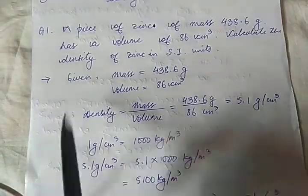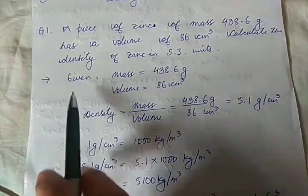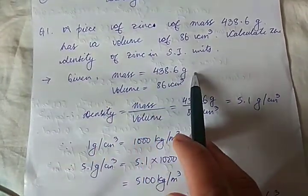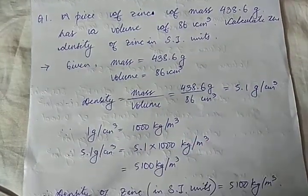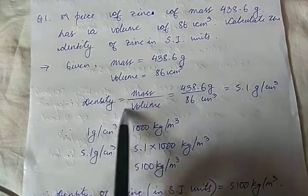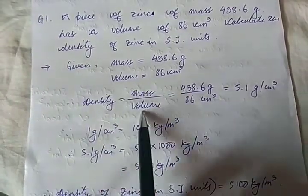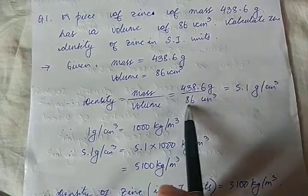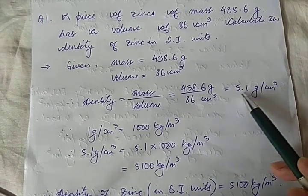Always start a numerical problem with what is given. Given: mass = 438.6 grams, volume = 86 cubic centimeters. Now, density is mass upon volume, which is 438.6 grams divided by 86 cubic centimeters.